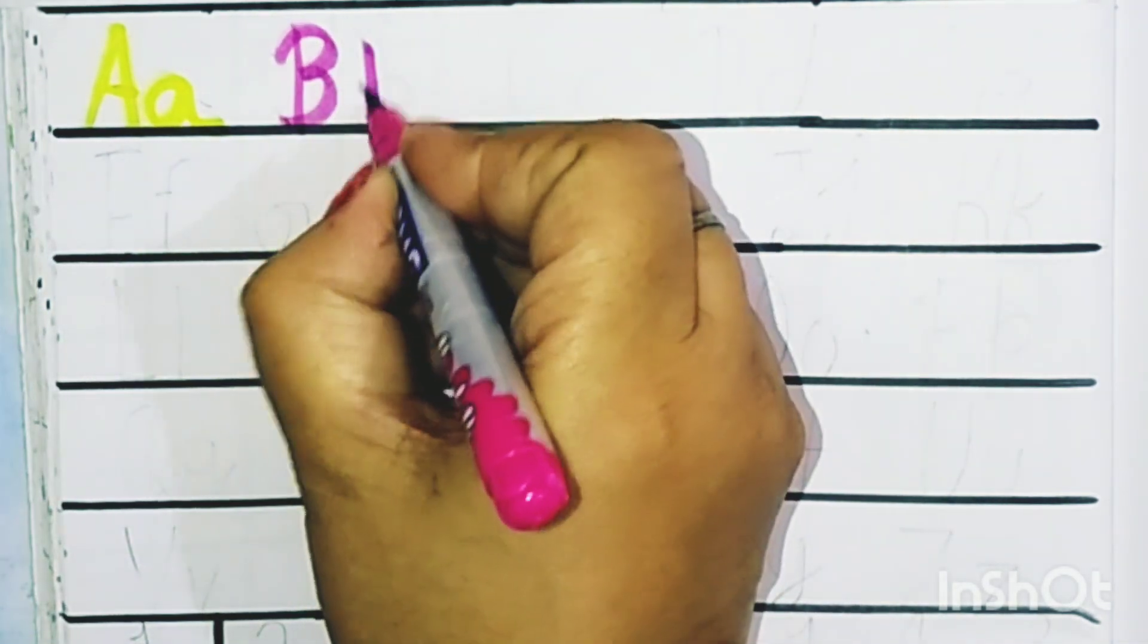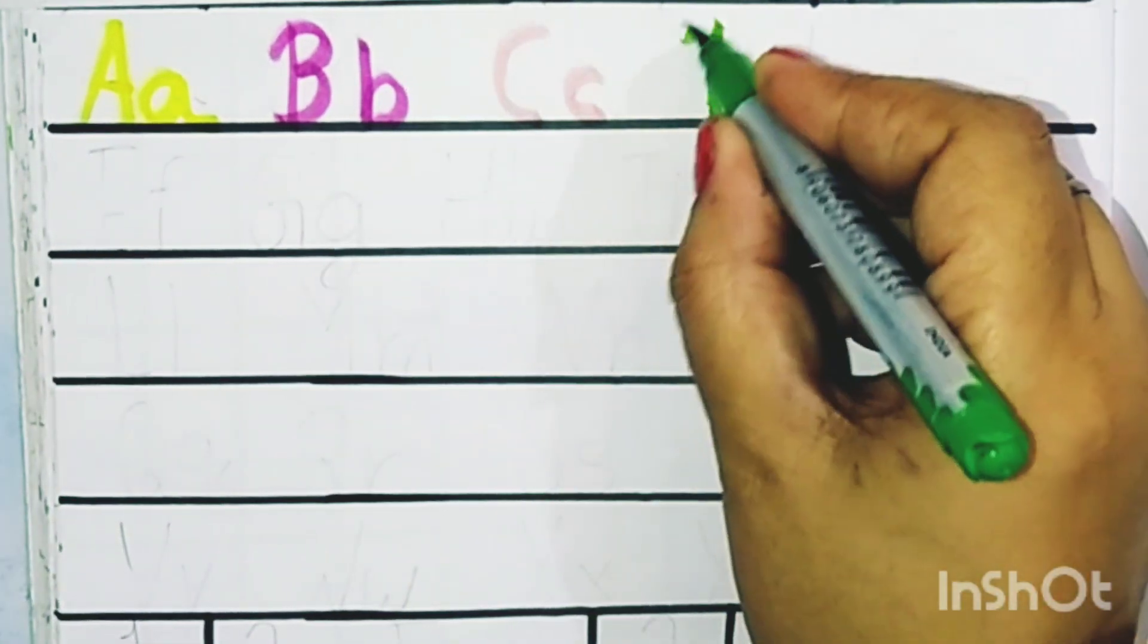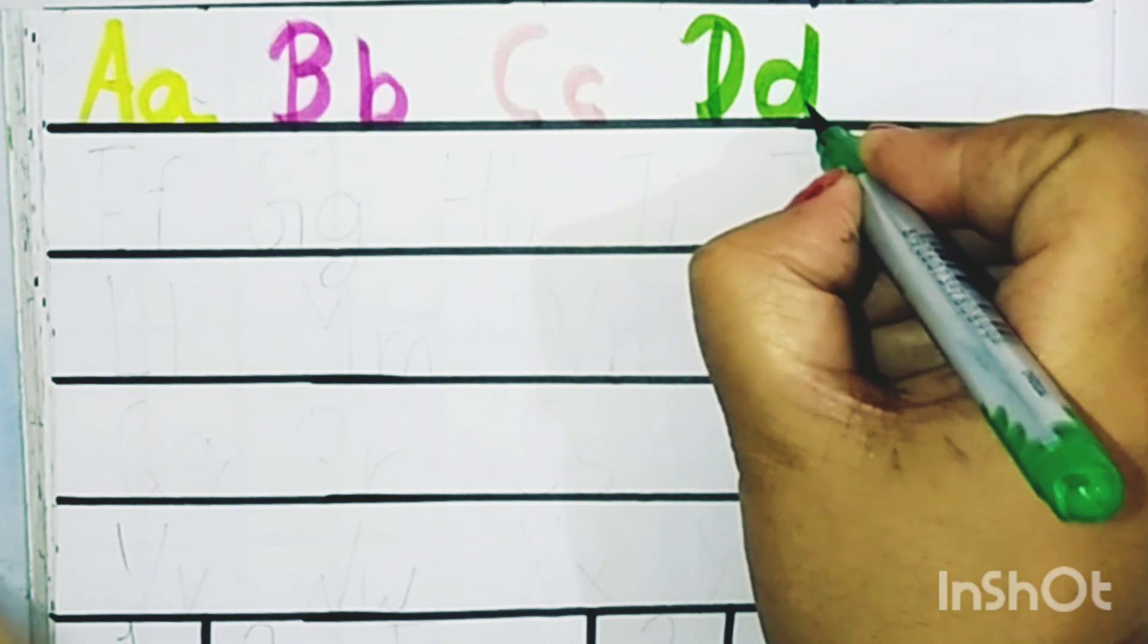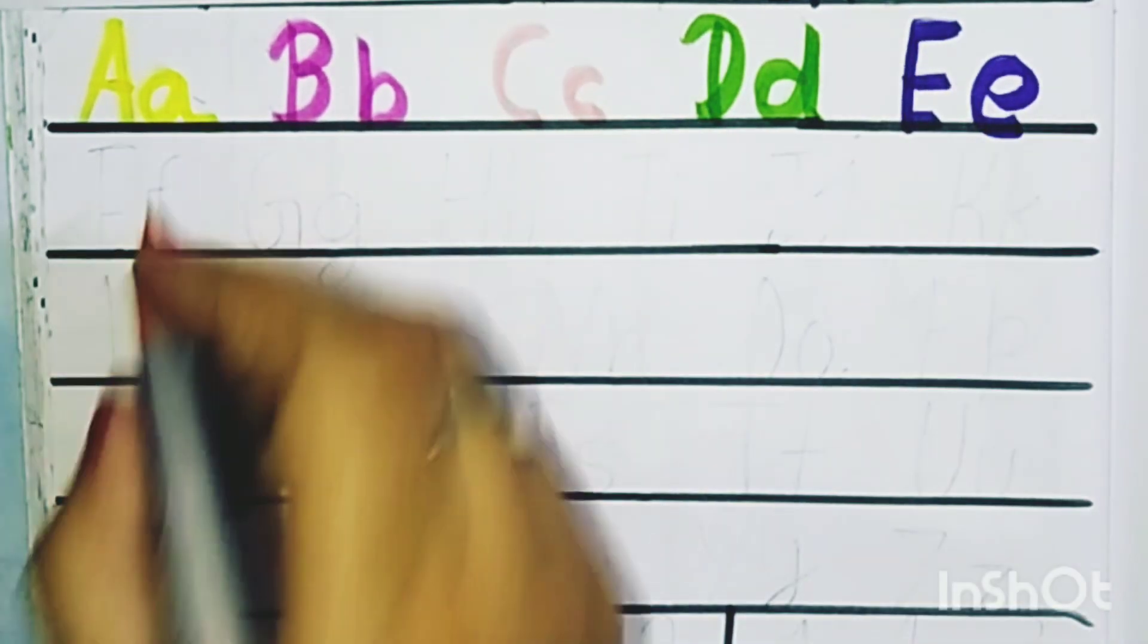B for ball, C for cat, D for dog, E for elephant, F for fish.